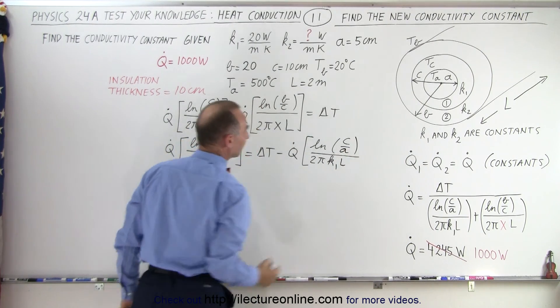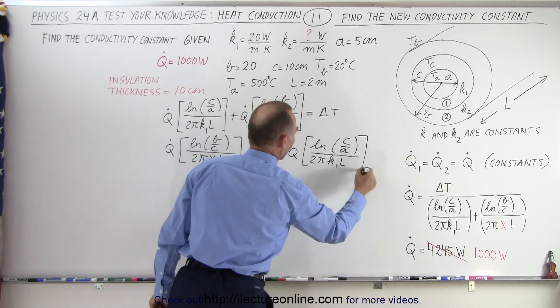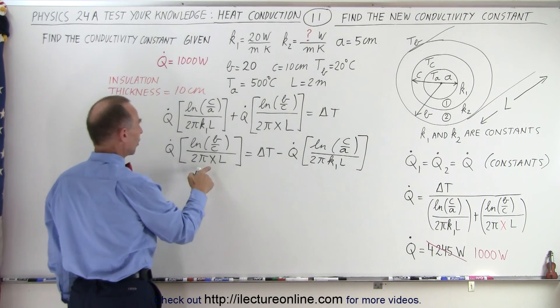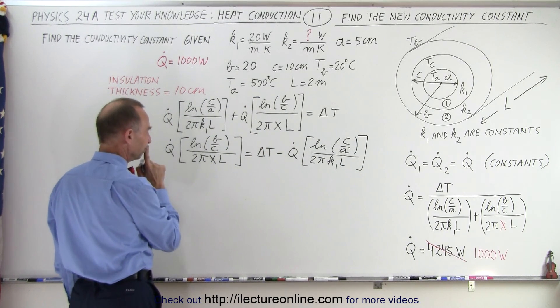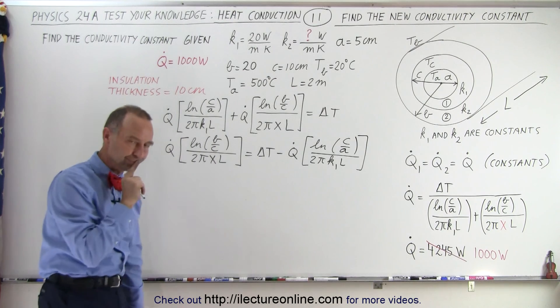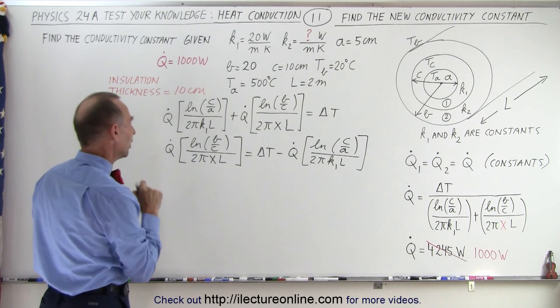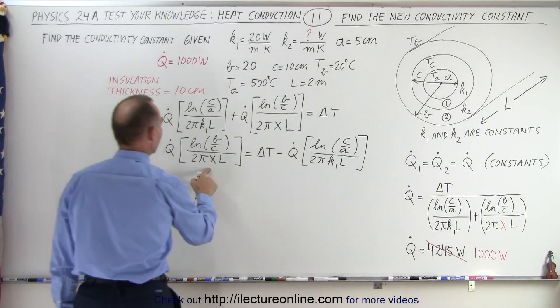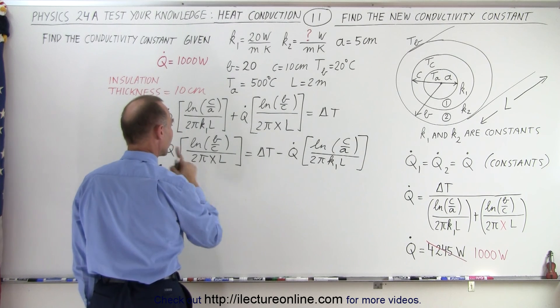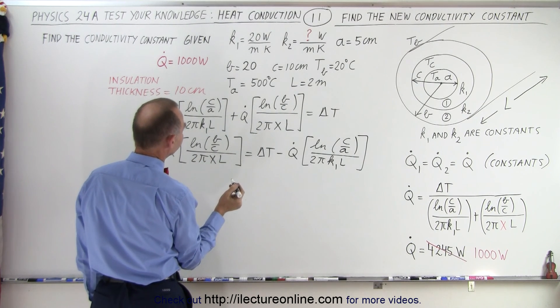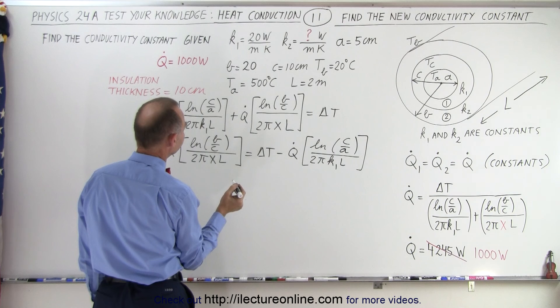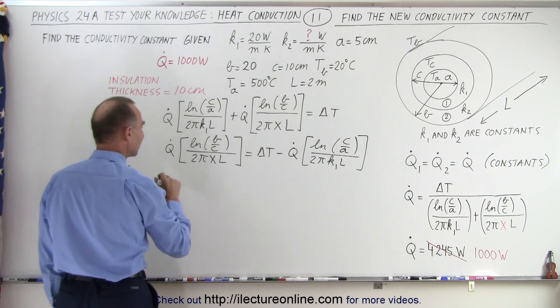And this should be an A right there. Alright, okay, and then we want to solve for X. So how do we do that? We bring the X over here and everything else down here. That would be one way. Okay, so let's do that.